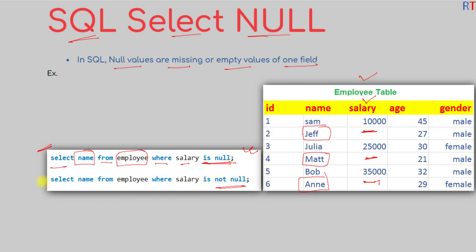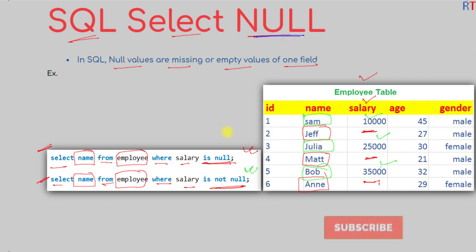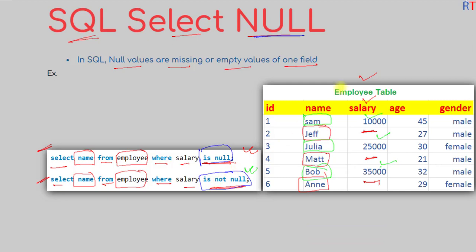We can also use the IS NOT NULL operator, which does the opposite. We write: SELECT column_name FROM employee WHERE salary IS NOT NULL. This query returns the names of all employees whose salary field is not NULL. That's how we use the NULL operator to select NULL or NOT NULL values from a table.